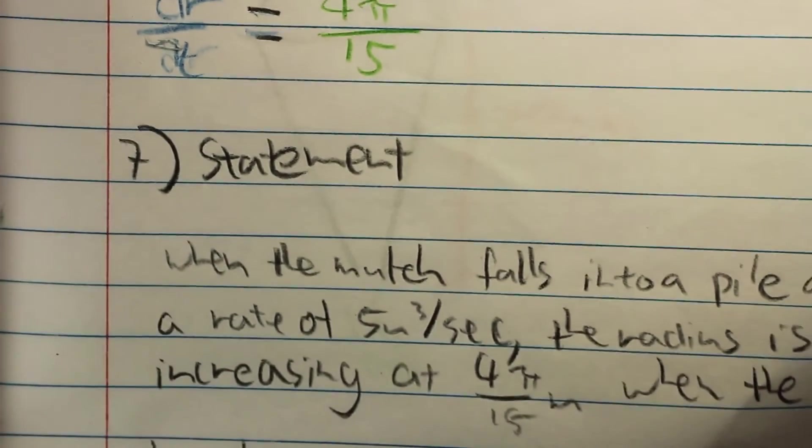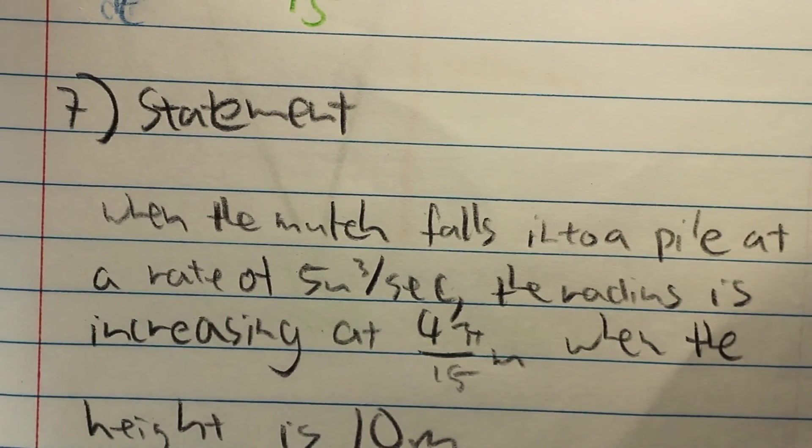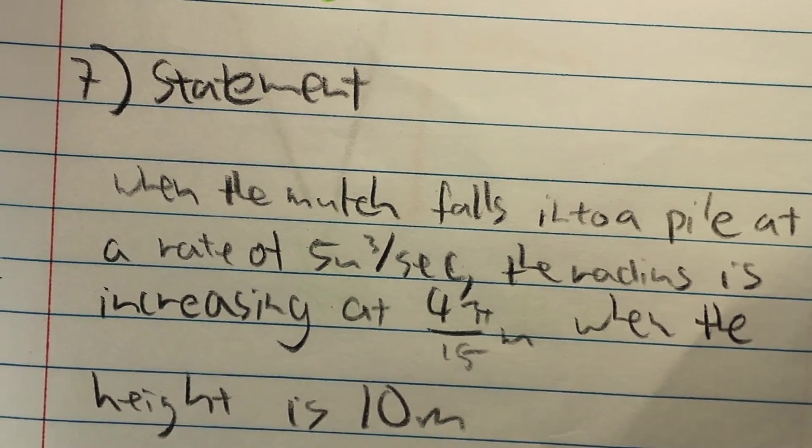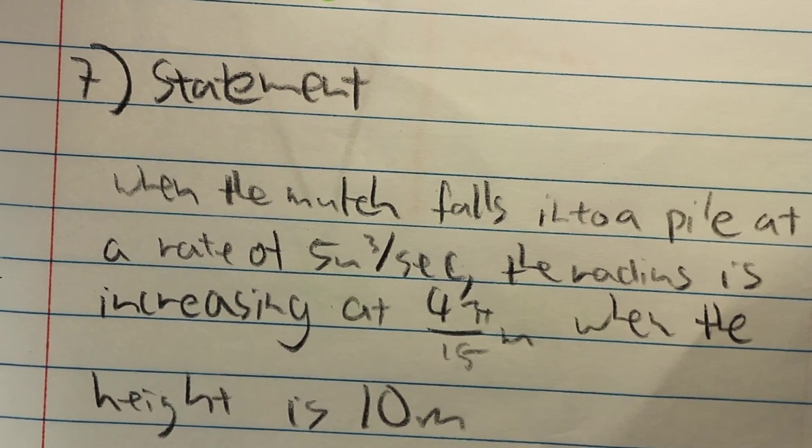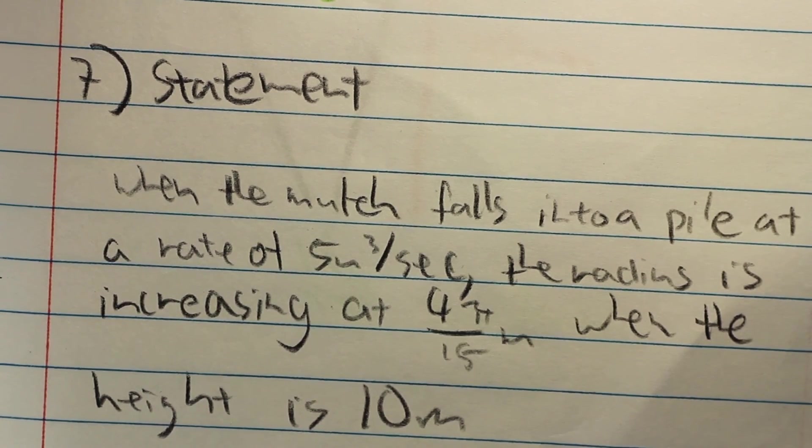Finally, you can make the statement, the calculus statement, saying that when the mulch falls into a pile at a rate of 5 meters cubed per second, the radius is increasing at 4π over 15 meters when the height is 10 meters. Thank you very much!